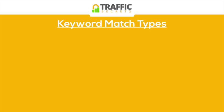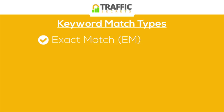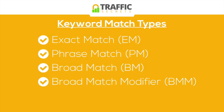There are certain match types we can use for how we handle keywords and which ads we want displayed based on different types of keywords that were used. There are four basic match types: exact match (EM), phrase match (PM), broad match (BM), and broad match modifier (BMM).